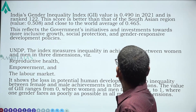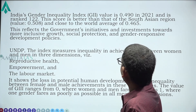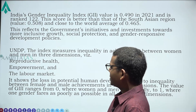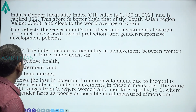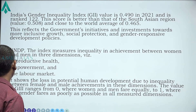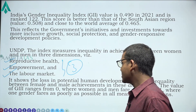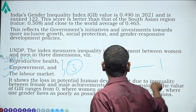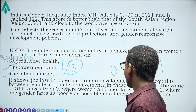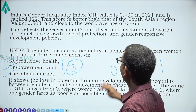India's Gender Inequality Index value is 0.490 and rank is 122, which is better than the South Asian regional average. The GII, published by UNDP, consists of three major components: reproductive health of women, empowerment of women, and participation of women in the labor market. It shows the loss in potential human development due to inequality between female and male achievement. The value ranges from 0 (equality) to 1 (perfect inequality), so a lower value is better.